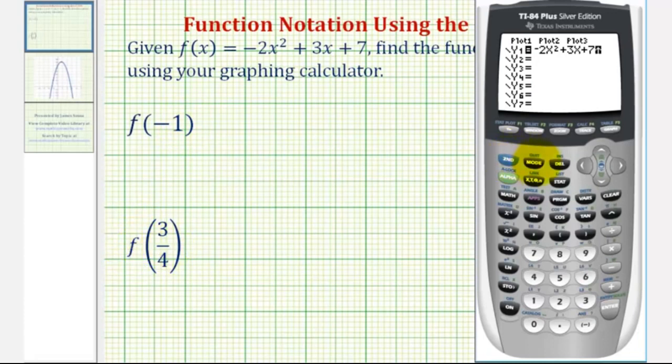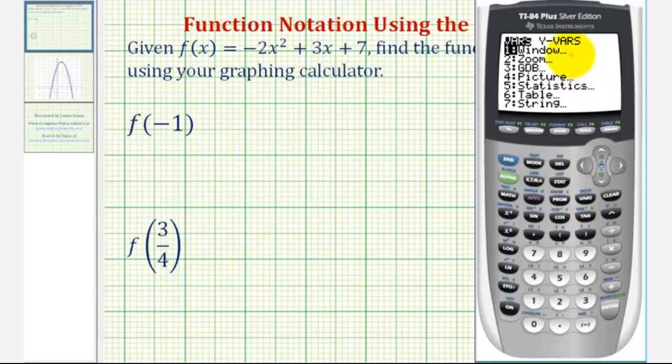We'll press 2nd MODE to go back to the home screen. And we want to enter the variable Y1, so we're going to press VARS, right arrow once to Y-VARS, ENTER. And since Y1 is already selected, we'll press ENTER again.